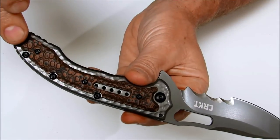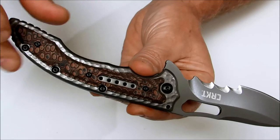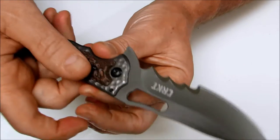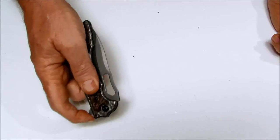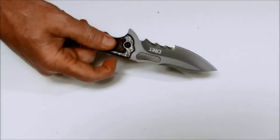All the hardware is black with Torx head adjustable. You have the IKBS pivot ball bearing system, which makes this knife super smooth opening up.